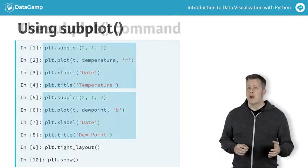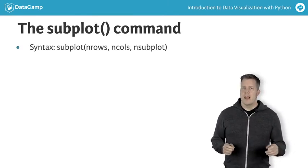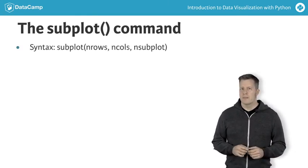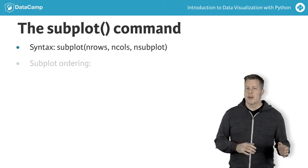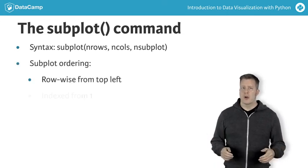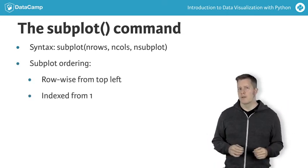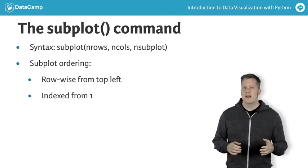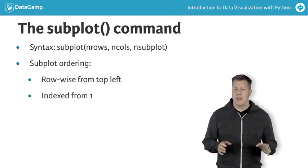The three subplot arguments are number of rows, the number of columns, and which subplot number to activate. Subplot numbers increase across rows and then down columns, starting from number 1 in the top left corner. Notice subplot grids are indexed from 1. This is unlike other Python arrays.